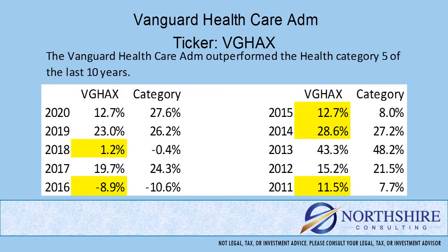Now that we've looked at expenses, what exactly are we paying for? If we own this fund, we're hoping that paying this expense will help us outperform the other funds in the category without deviating from the objective. This fund has outperformed its peer group 5 out of the last 10 years.